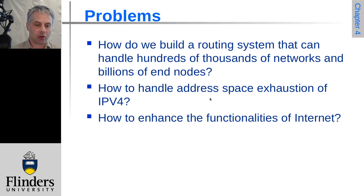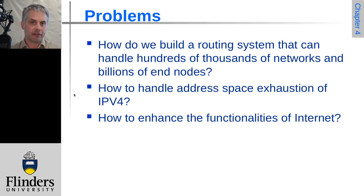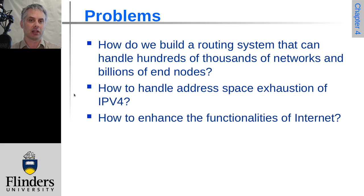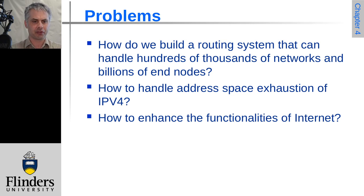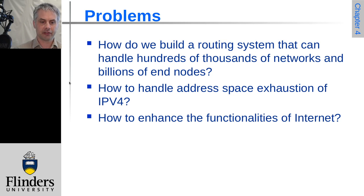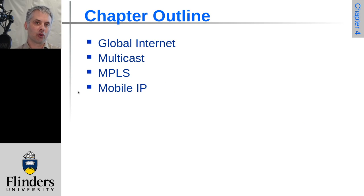There is also a problem in that the IPv4 address space is only about 4 billion addresses. There are more than 4 billion people on the planet, and certainly more than 4 billion mobile phones and devices that all want to be connected to the internet. So how can we address this, and are there other things we can improve in the way the internet works to make life easier for network administrators and constructors?